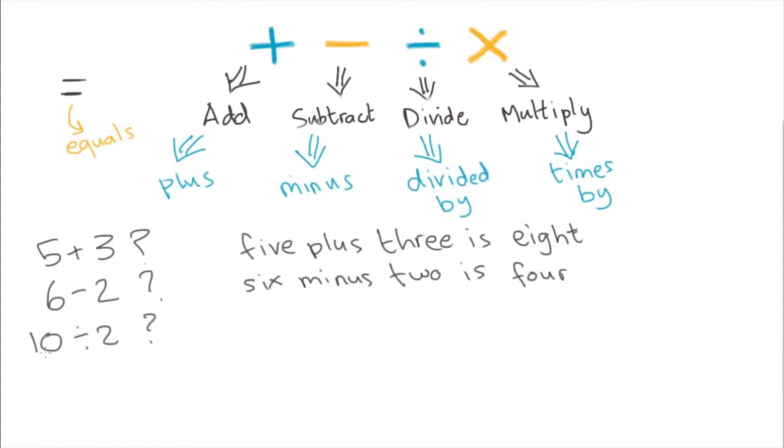What is ten divided by two? Ten divided by two is five.